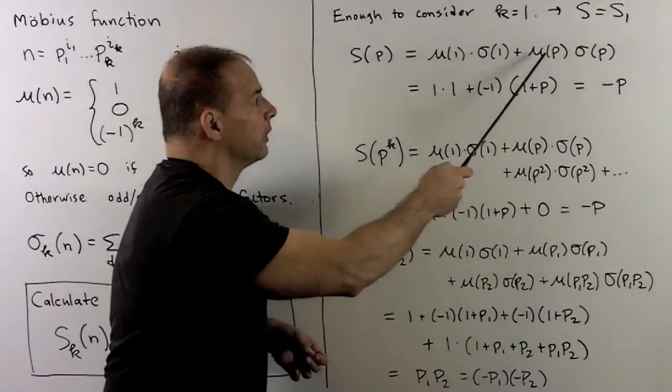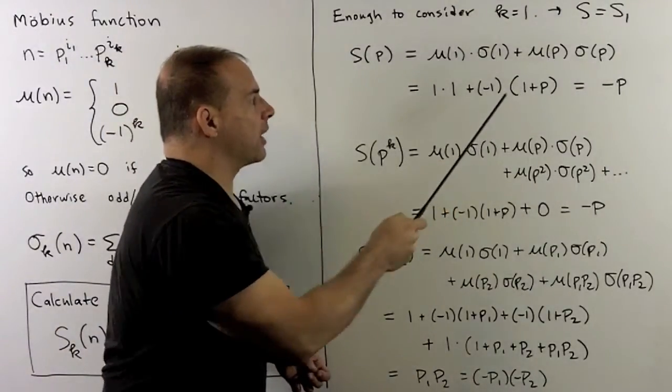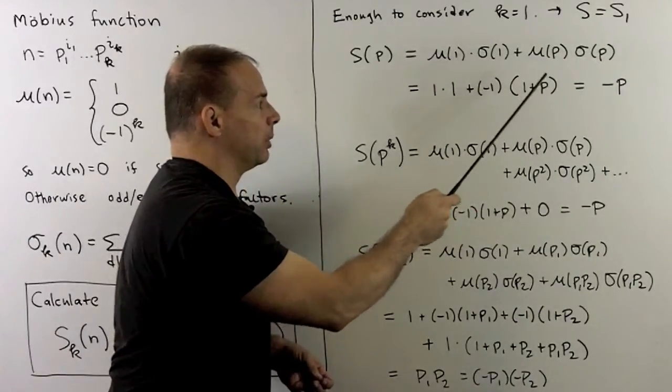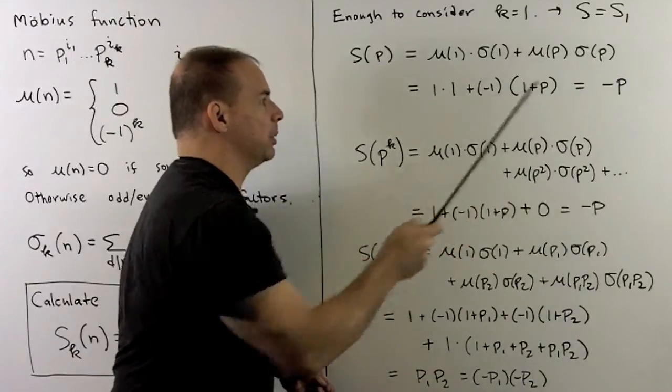For mu of p, there's a single prime factor, so I get a minus 1. Then the sum of the divisors of p is going to be 1 plus p. So I work this out. I get a minus p.